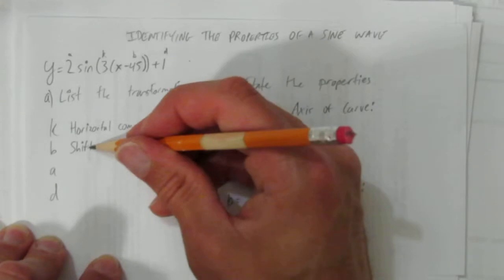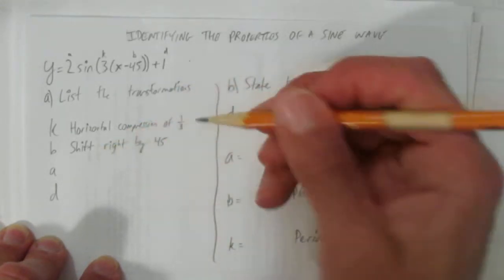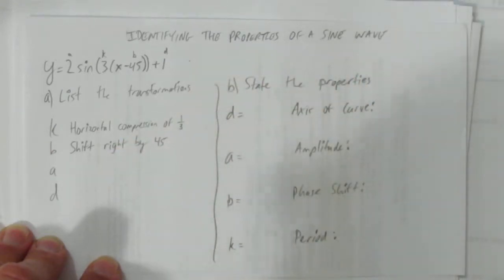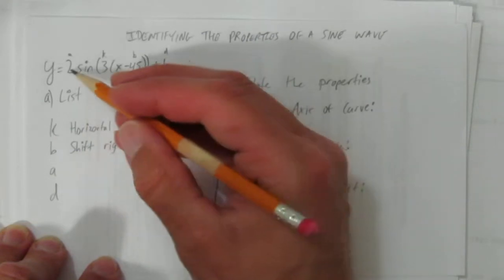Again, you need to have the type, the direction, the number. Could have also said right shift 45 or 45 shift right. But as long as you do it in the right order of the k first, then the b. Now the a.